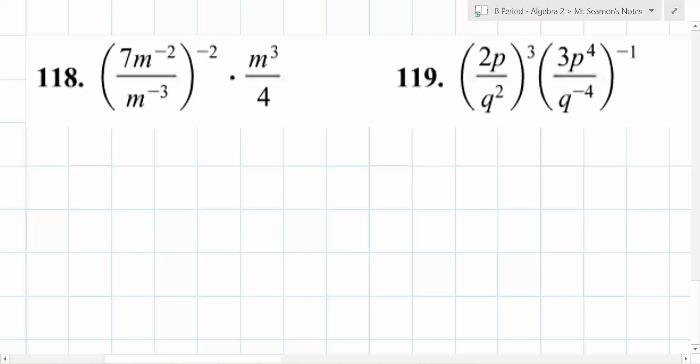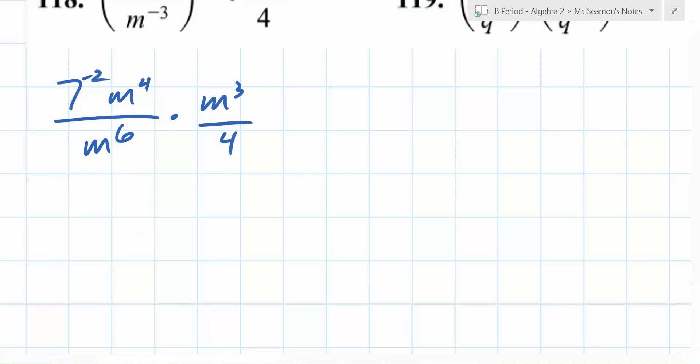Okay, so let's have... I'm going to do the way I would do it. Personally, this is how I would do it. First thing I would do is I would take that negative 2 and I would bring it inside. It's powers of power, so it's going to become 7 to the negative 2, m to the 4th over m to the 6th times m to the 3rd over 4th. That's what I would do. There are other ways. That's fine. On the top, Sarah, on the top you have m to the 4th times m to the 3rd. What is that going to come out to be?